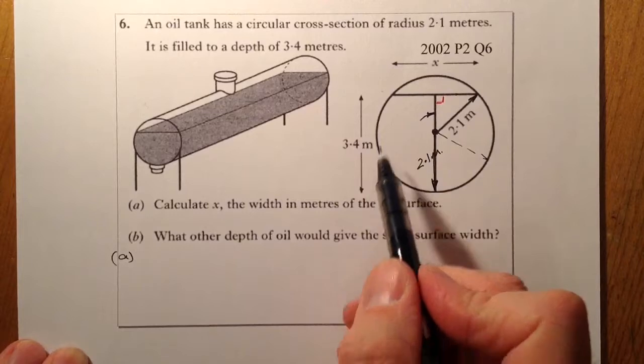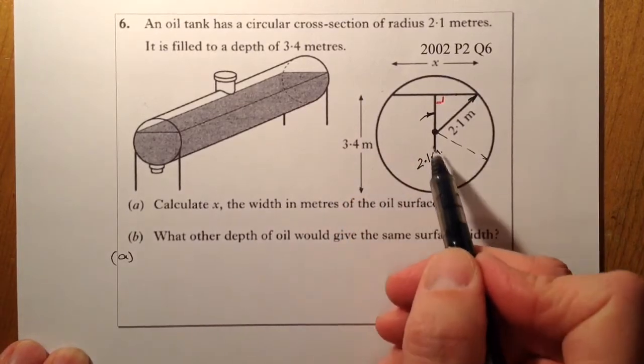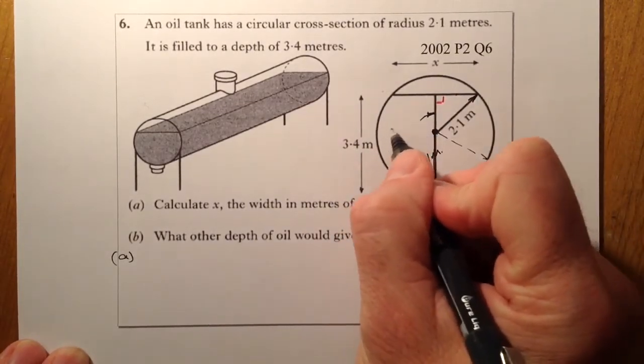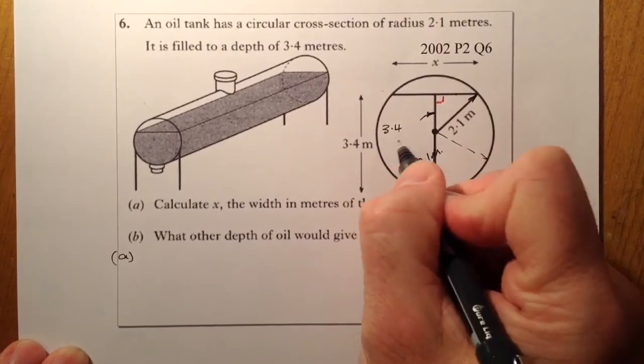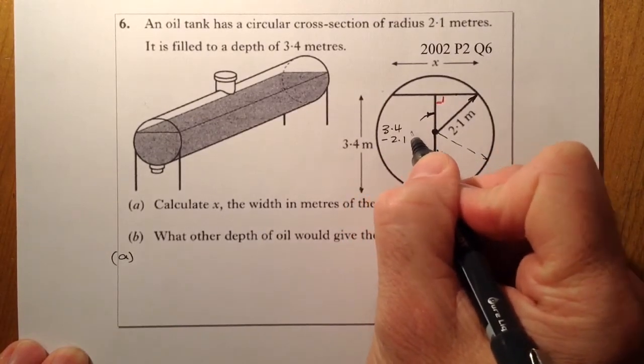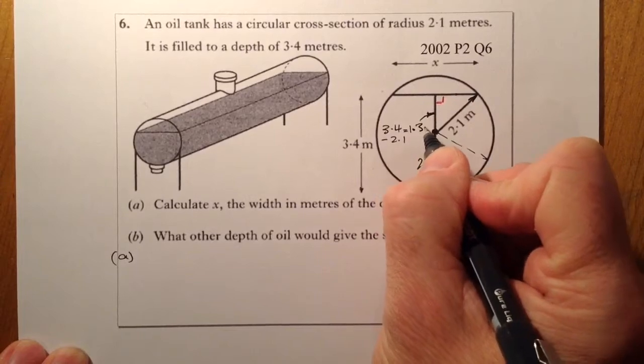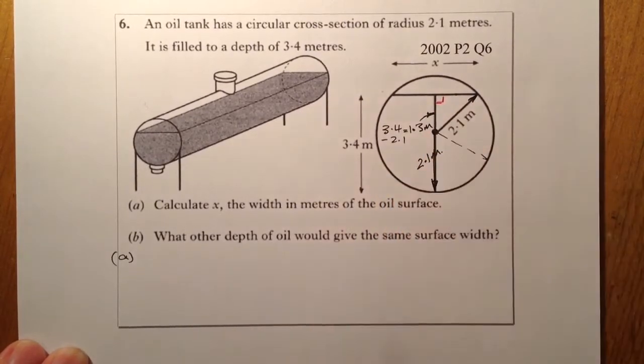I know the depth there is 3.4. That's already 2.1, so that must leave this part here as 3.4 minus 2.1, which equals 1.3 metres for that length.